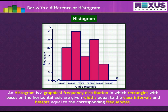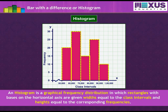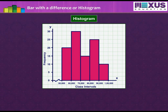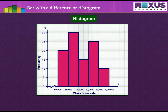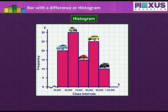A histogram is a graphical frequency distribution in which rectangles with bases on the horizontal axis are given widths equal to the class intervals and heights equal to the corresponding frequencies. Here, we can show a jagged or broken line along the horizontal axis to indicate that we are not showing the numbers from 0 to 50,000. Histogram can be helpful to infer data — for this example, the company can get a quick observation of which type of car and number of cars is to be bought for employees with the annual income categories and their frequency, just by looking at the graph.